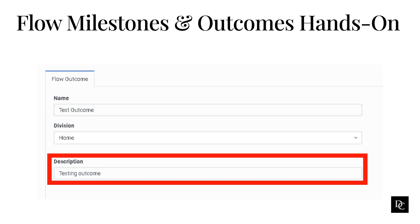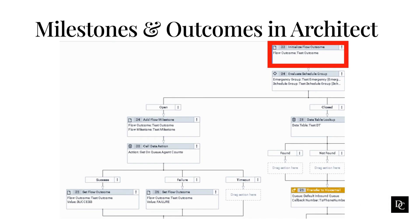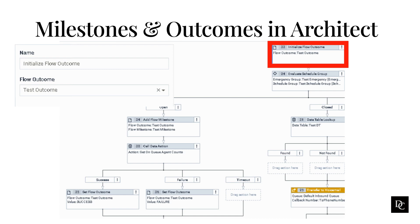Now, let's see how what you just created is implemented in Architect. Use the Initialize Flow Outcome action to choose a flow outcome that Architect begins to track in the flow. This action is available in the flow category of the task editor's toolbox for call, chat, email, and messaging flows, excluding in-queue call flows. When an interaction encounters this action, Architect creates a date and time starting point for the outcome. In the name field, type a distinctive name for the action, or leave the default text 'Initialize Flow Outcome.' The label you enter here becomes the action's name displayed in the call, chat, email, and messaging flow structure. In the flow outcome field, click the list and choose the outcome Architect begins to track in the flow.